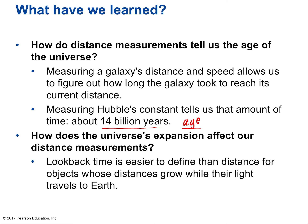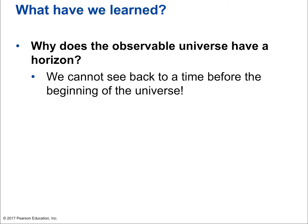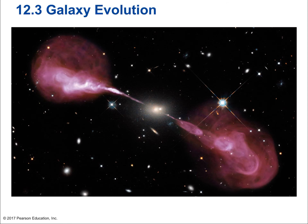How does the universe's expansion affect our distance measurements? Look-back time is easier to define than actual distance for objects whose distances grow while their light travels to Earth. We're not sure what has happened since the light was emitted — that galaxy might not even be there anymore, it could have crashed into something else. We cannot see back in time before the beginning of the universe. Now let's move to galaxy evolution, looking at the life history of galaxies.